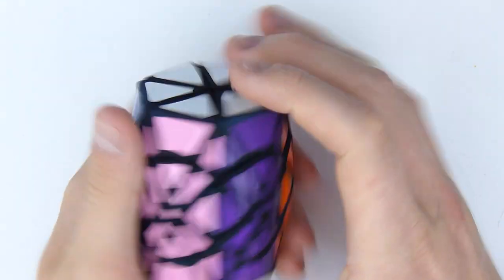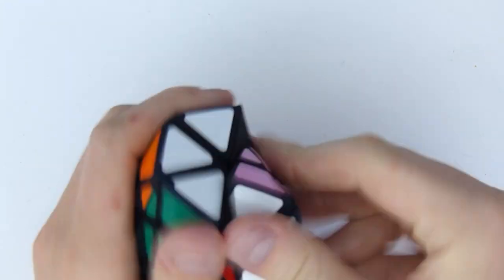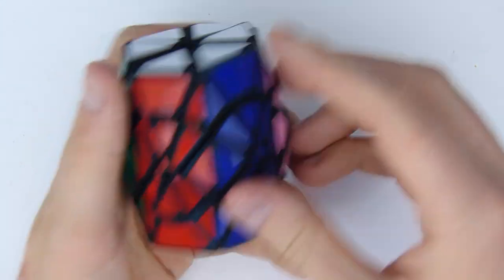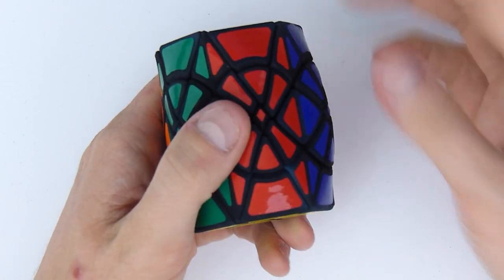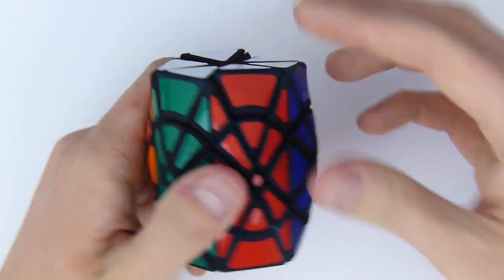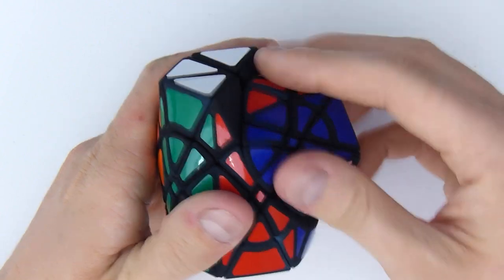So let's see how it turns. So this is the turning you get on this puzzle. So it looks like it's an edge turner, but it's actually the equivalent of a corner turner. So this is what you get.